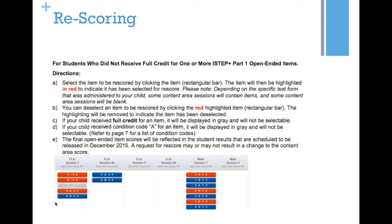You'll see something that looks like this, a big square. It shows the different sessions that there were open-ended items in and boxes that will all initially be blue. If you have items that are blue, you can click on the item — the little rectangular box. The item will be highlighted in red to indicate that you have selected it to be re-scored. Depending on the specific test form that was administered to your child, some sessions will contain items and some will be blank — that is normal. You can deselect an item if you've already selected it to be re-scored and you change your mind; you click on the red and it will become blue, which means it is not selected to be re-scored. If your child received full credit on an item, it will be in gray and that will not be selectable.